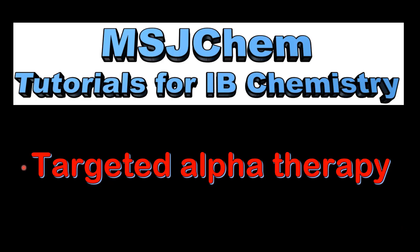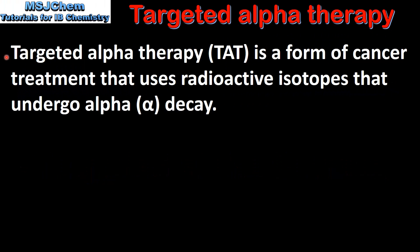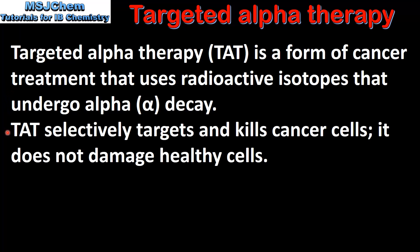This is MSJChem. In this video I'll be looking at Targeted Alpha Therapy. Targeted Alpha Therapy is a form of cancer treatment that uses radioactive isotopes that undergo alpha decay. It selectively targets and kills cancer cells, therefore it does not damage healthy cells.